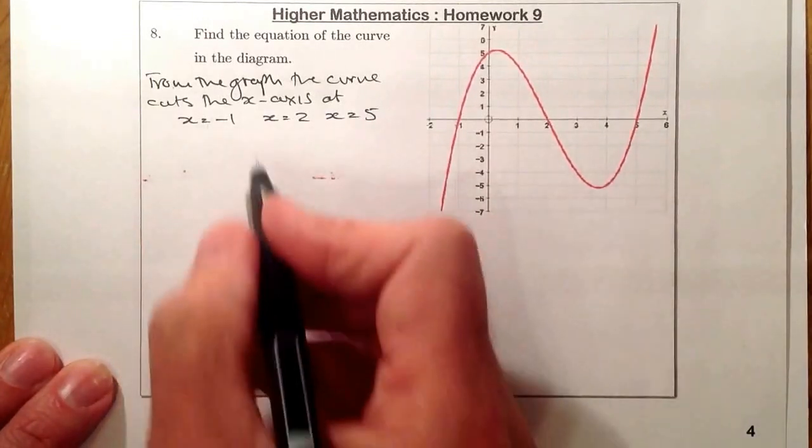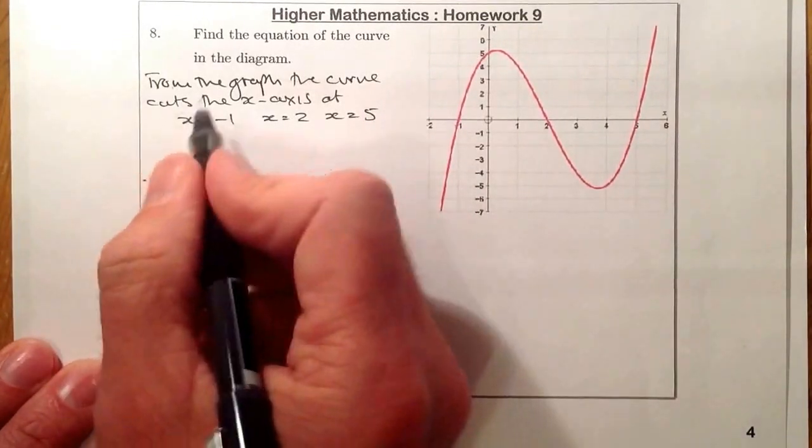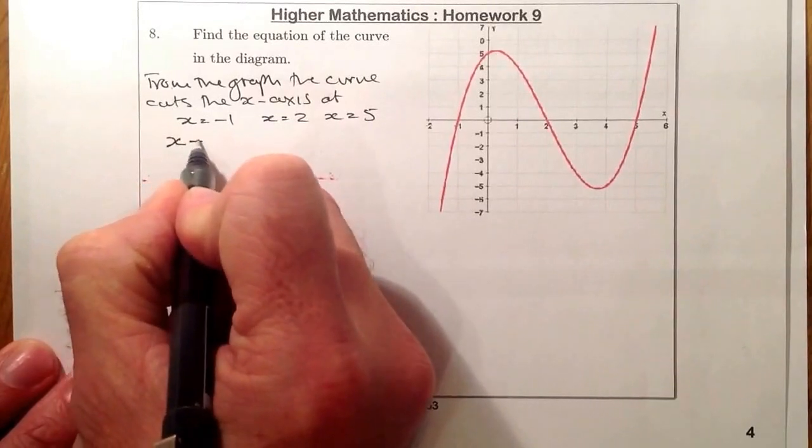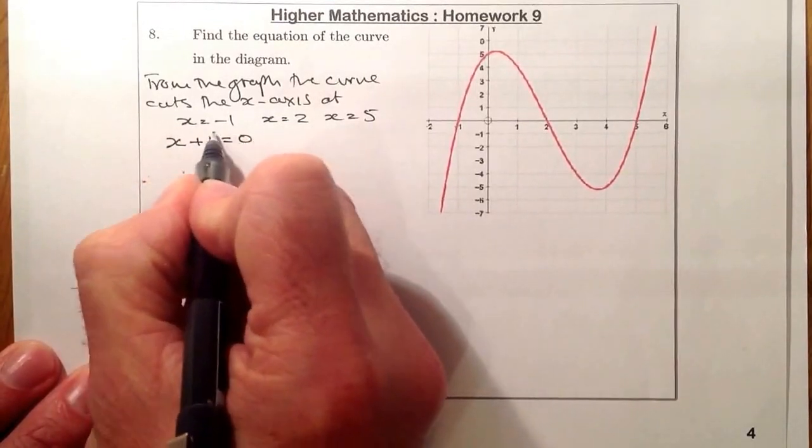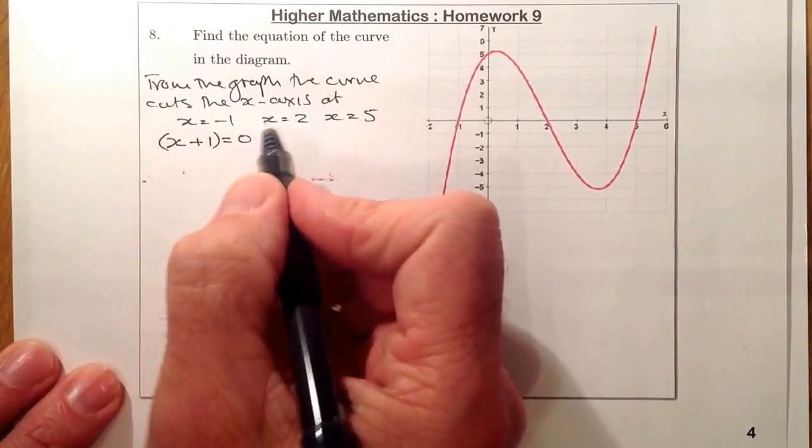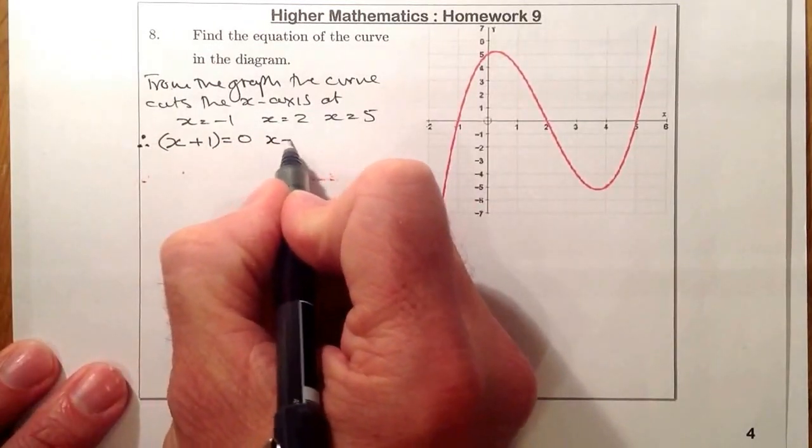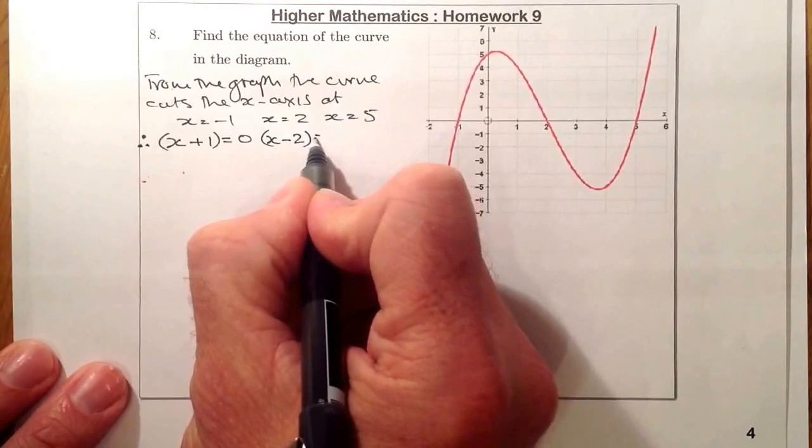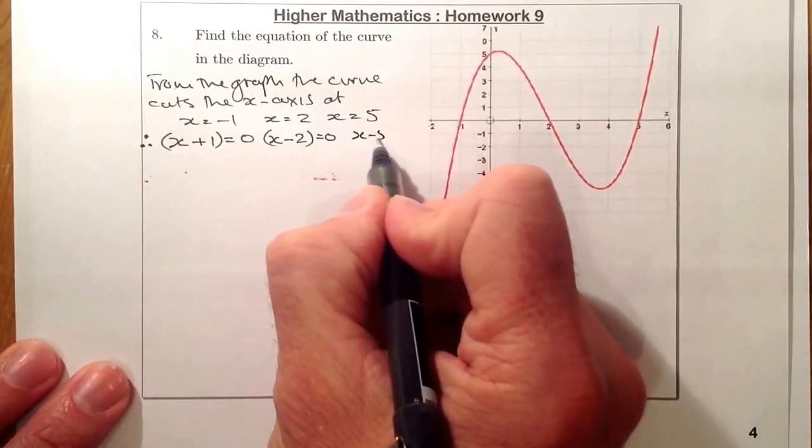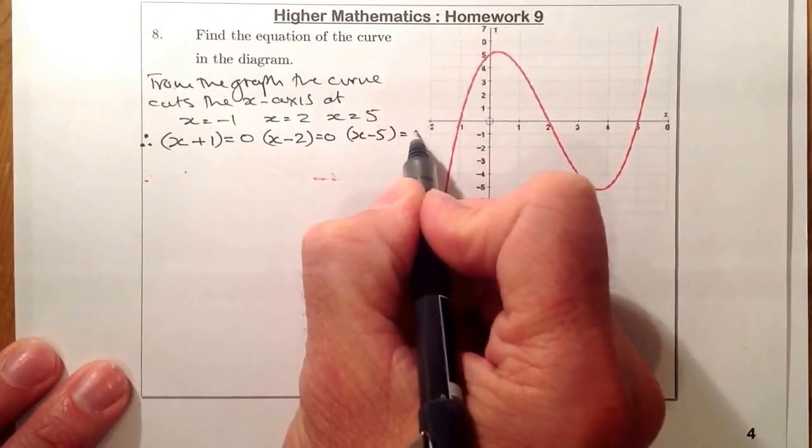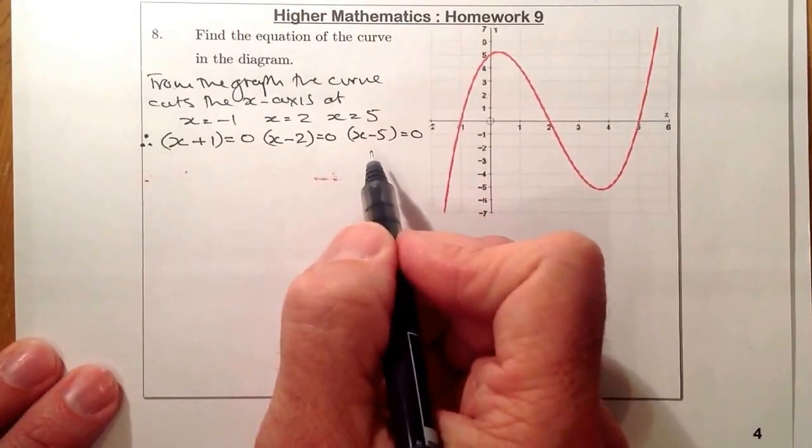So from that there, I know that if I take the minus 1 over to that side of the equation, I've got x plus 1 equals 0. So what that's starting to give me is some factors. Here I've got x minus 2 equals 0, and I've got x minus 5 equals 0. So these are all my factors that I'm going to use.